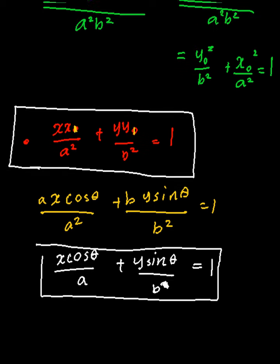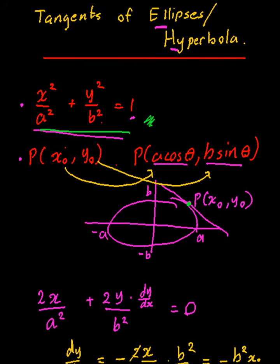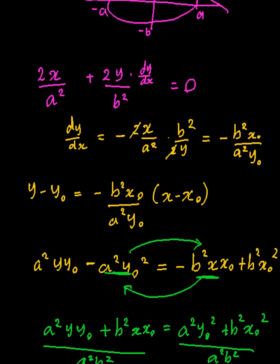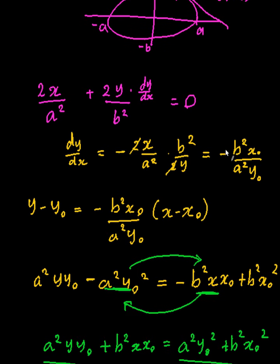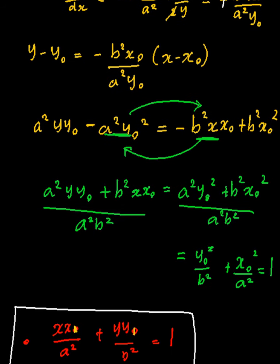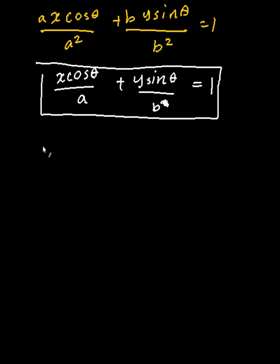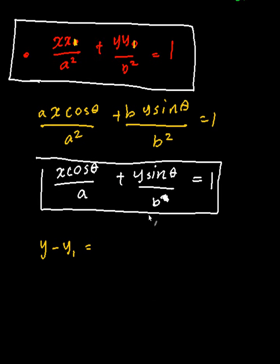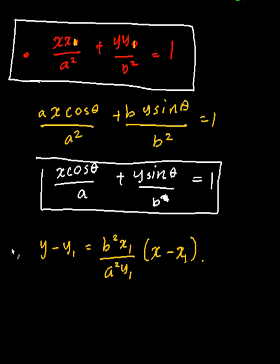For a hyperbola, the only difference is that there's a minus sign in the equation. Because of that, the derivative changes sign — instead of minus b squared x1 on a squared y1, it becomes positive b squared x1 on a squared y1. So the tangent equation is y minus y1 equals b squared x1 on a squared y1 times x minus x1.